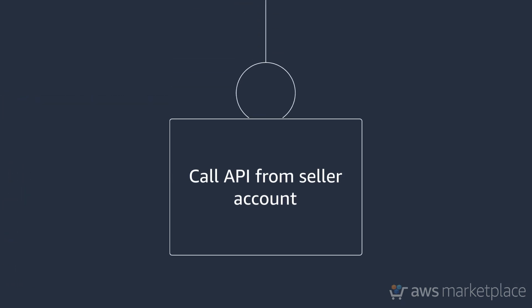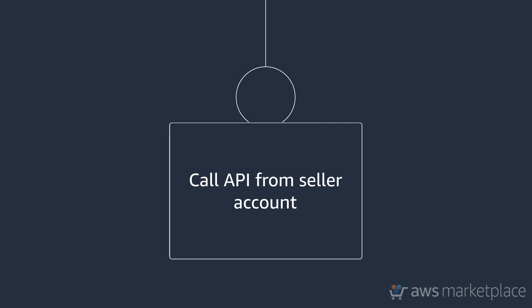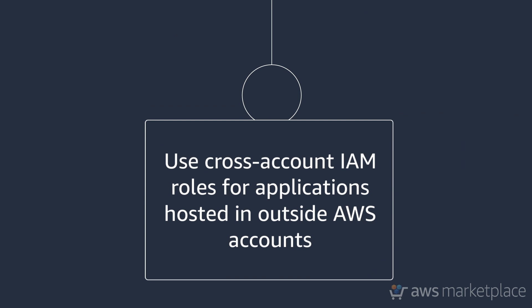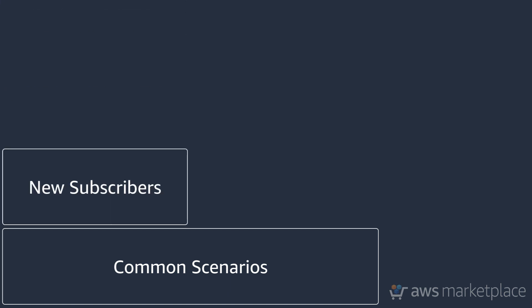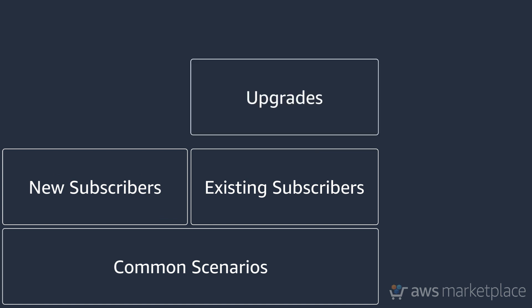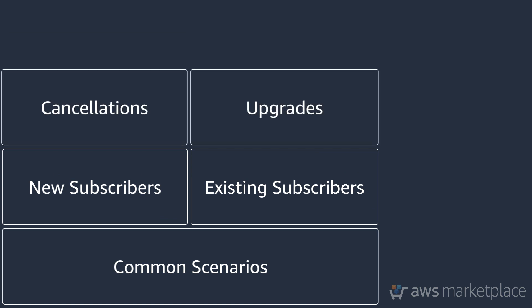First, you need to call the Marketplace APIs from the AWS account that is registered as a Marketplace seller. If your SaaS application is hosted in a different AWS account, then use cross-account IAM roles with permissions to call the Marketplace APIs. Second, consider common subscription scenarios upfront, regardless of the pricing model selected. This includes new subscribers, existing subscribers, upgrades, and cancellations. This is important to think about in the beginning so that you design an integration that can handle different customer use cases. We will cover these in more detail throughout the video.